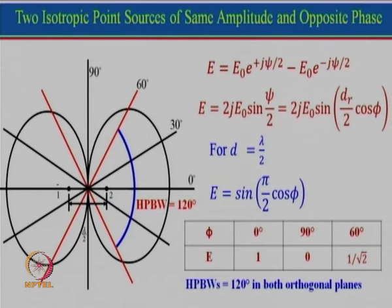In this case the half power beam width is 120°. In the previous case we had seen half power beam width was 60°, but here it is 120°. This made people think why we cannot improve it, and this thought process led to the increased directivity end-fire array concept, which we will see later on.